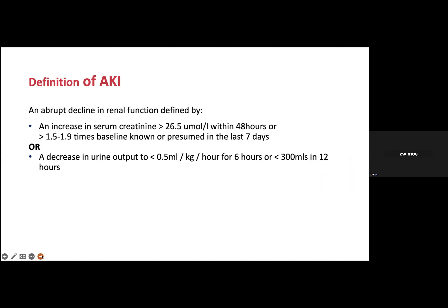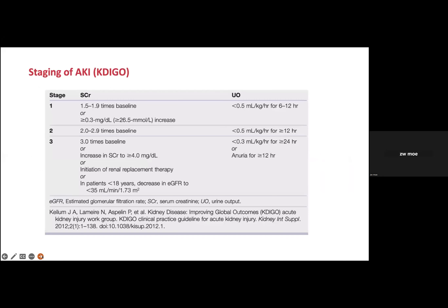We have staging of acute kidney injury — stages one, two, and three — depending on the category.